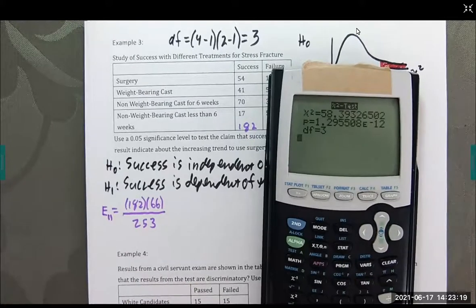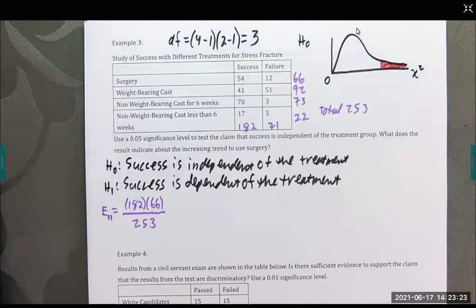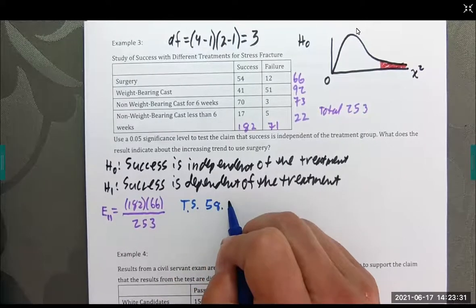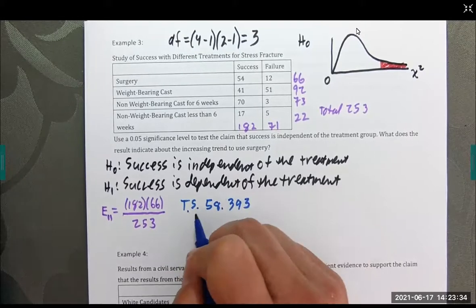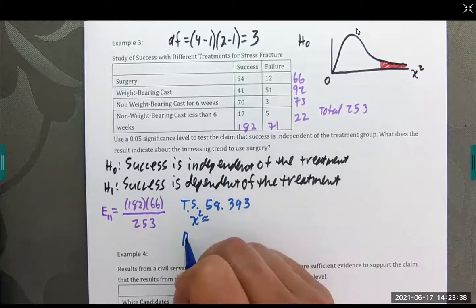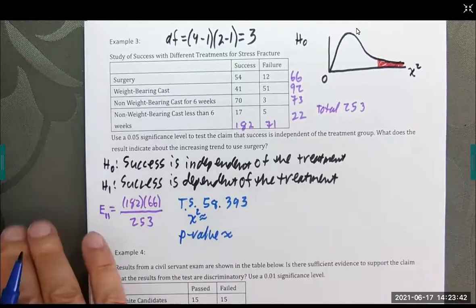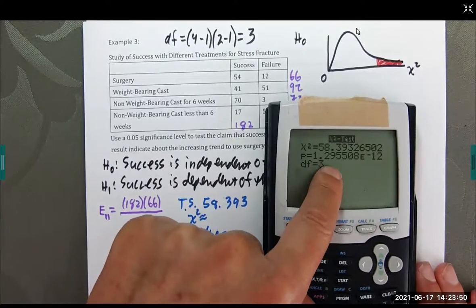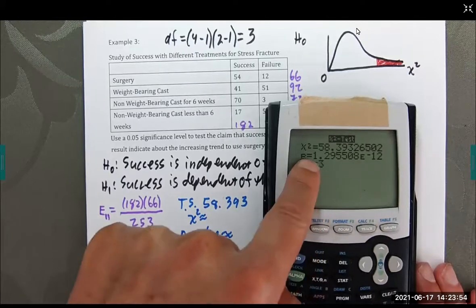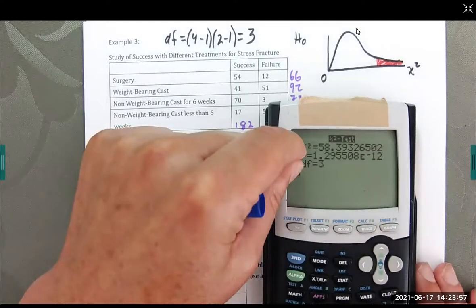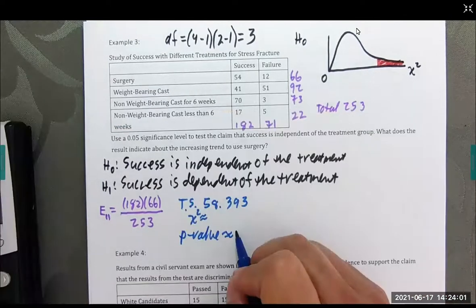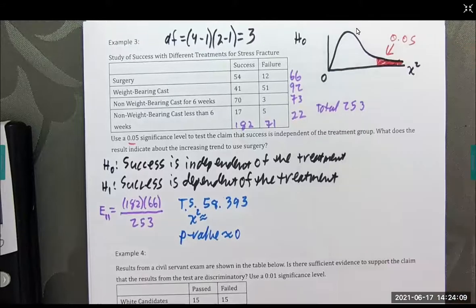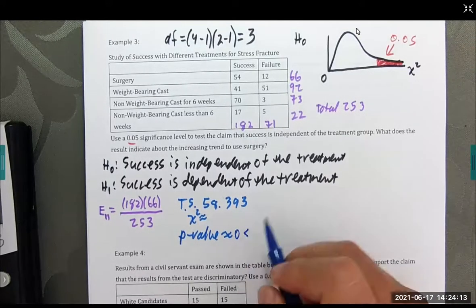So this gives us our test statistic. In this case is 58.393. This is chi-squared. And the p-value. Now, I want to show you this number again. By the way, notice the degrees of freedom of three, as I mentioned. Now, this looks like 1.295 and so on, times 10 to the negative 12. That means I have to move that decimal 12 places. There's going to be 11 zeros and then one and so on. So the p-value in this case is about zero, which is way less than alpha, that was here 0.05. This is clearly less than 0.05.